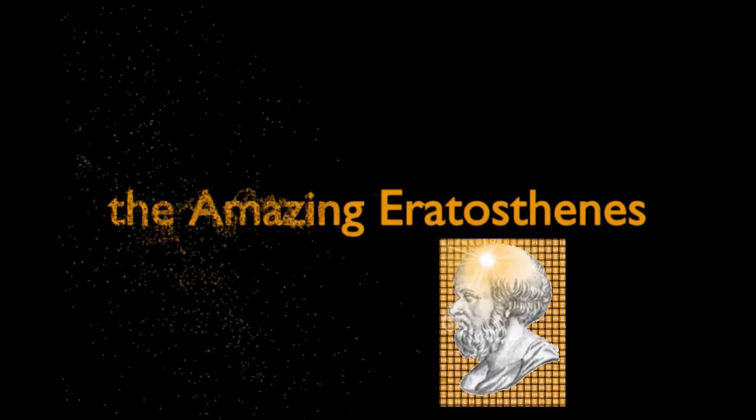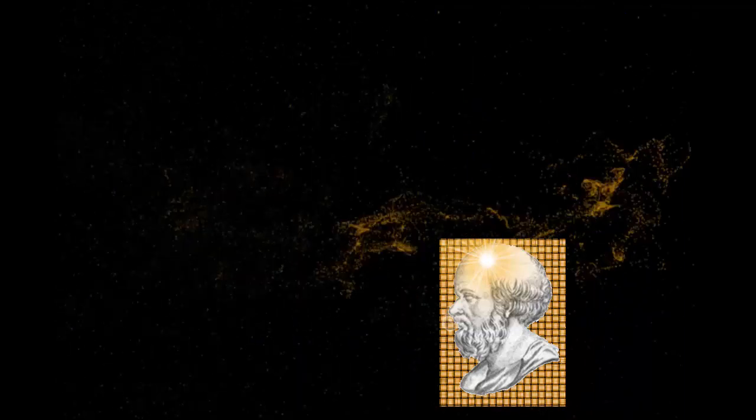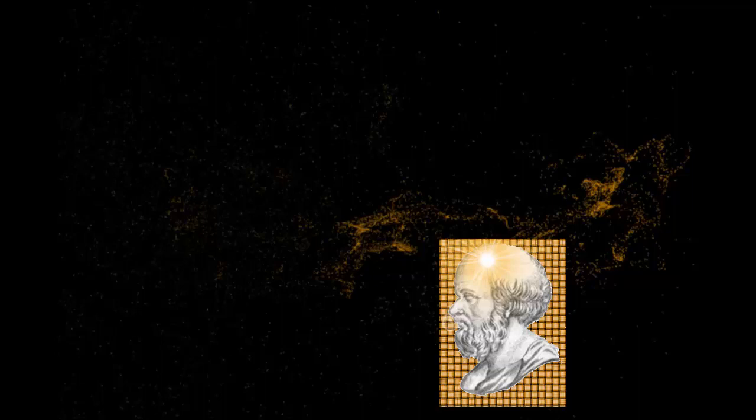Eratosthenes was a Greek scientist working in Ancient Egypt for the Pharaoh. He is most famous for his amazingly accurate estimate of the size of the Earth in a brilliant experiment that he conducted at the dawn of recorded history in 240 BC. In this video, we'll take a hands-on approach and see how he accomplished this seemingly impossible task.